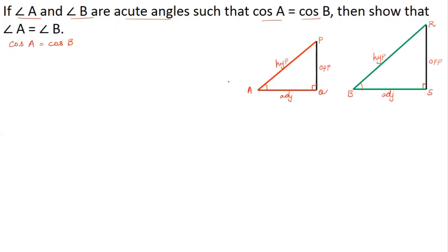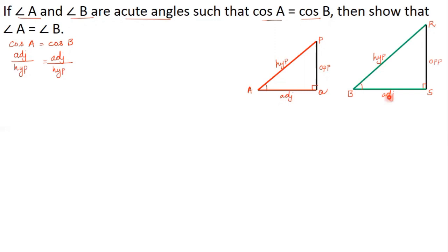It is given that cos A is equal to cos B. The formula of cosine is adjacent divided by hypotenuse. For angle A, adjacent side is AQ and hypotenuse is AP. For angle B, adjacent side is BS and hypotenuse is BR. So AQ divided by AP is equal to BS divided by BR.